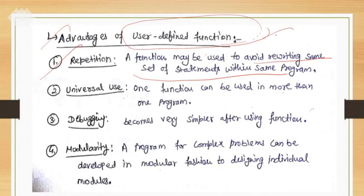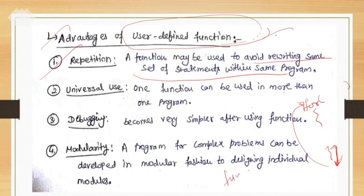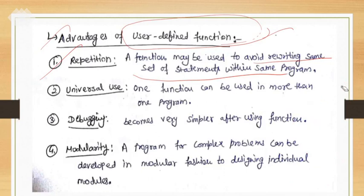For a function, if you want to perform a task in a generalized form, you make a general formula and execute that statement wherever you call that particular function. There is a difference between a loop and a function. If your program comes out of a for loop it will never go back again. But with functions, wherever throughout the program you call the function by name, it will work in the same manner.